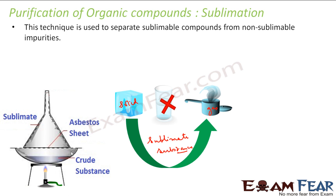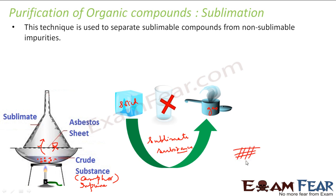The technique used here: we take the organic compound we want to purify — it has to be a sublimable substance, for example camphor, which is a sublimable organic compound. We put impure camphor in the apparatus and heat it. The camphor in solid phase converts directly to gas phase. We have placed an asbestos sheet here — gas can pass through it, but solids cannot, because the holes are small.